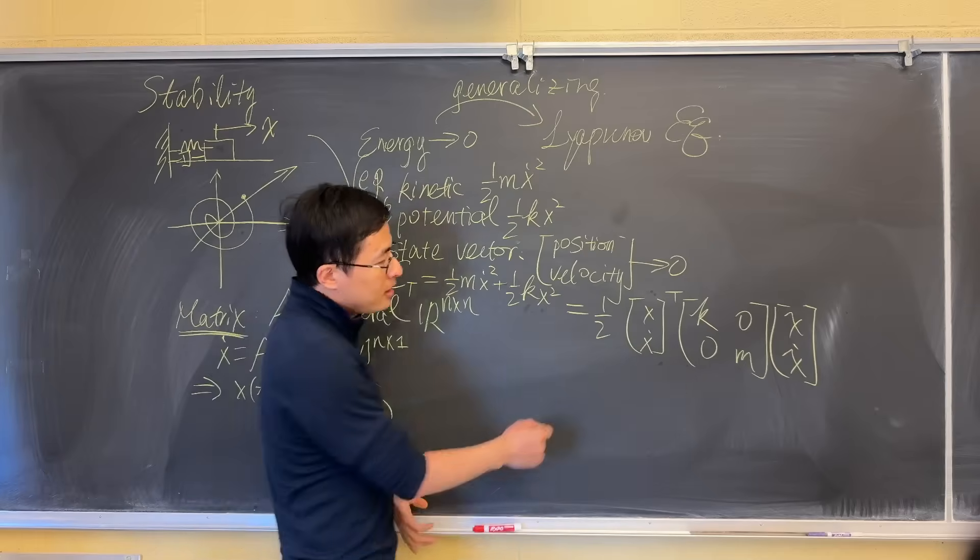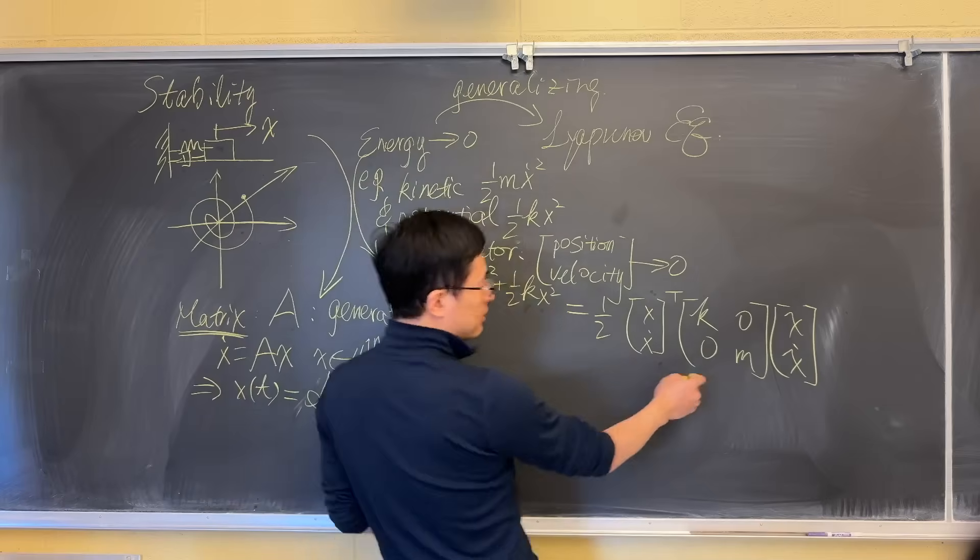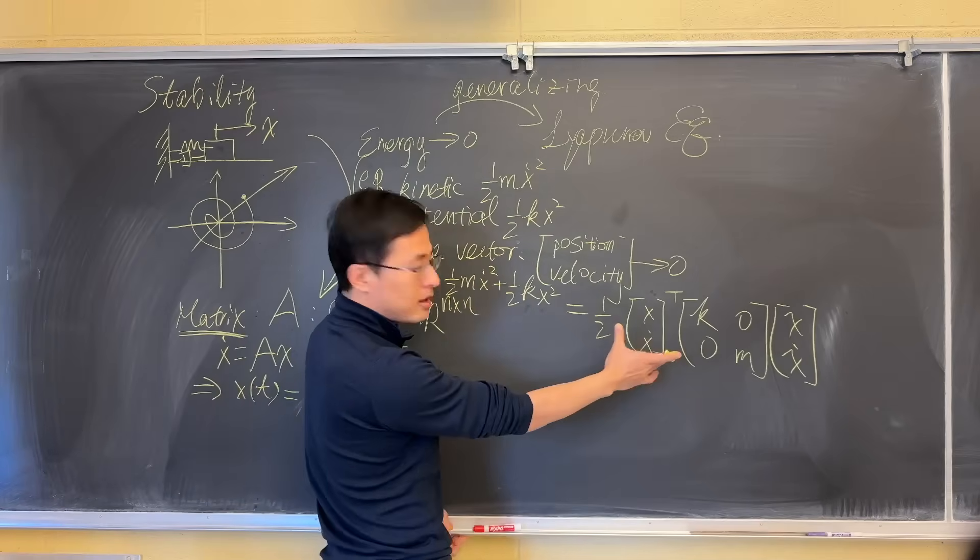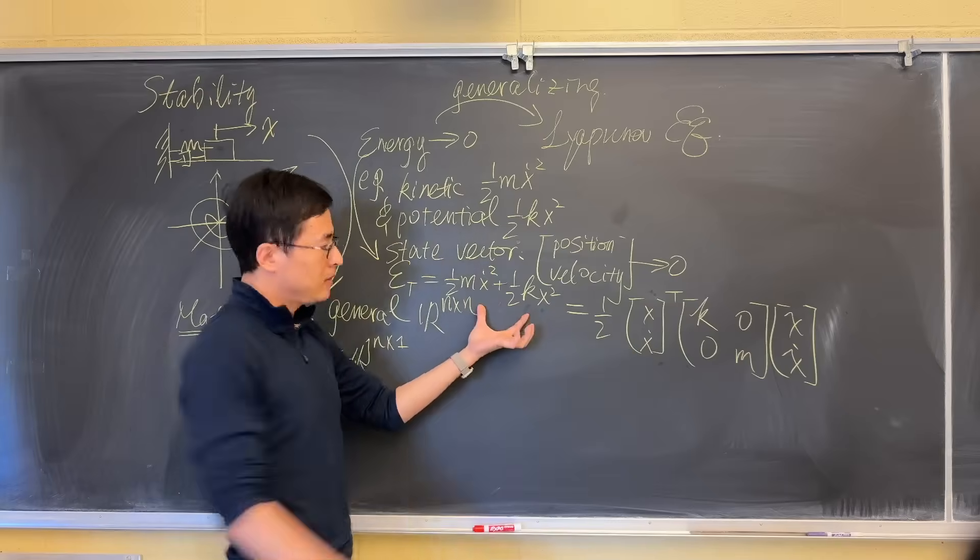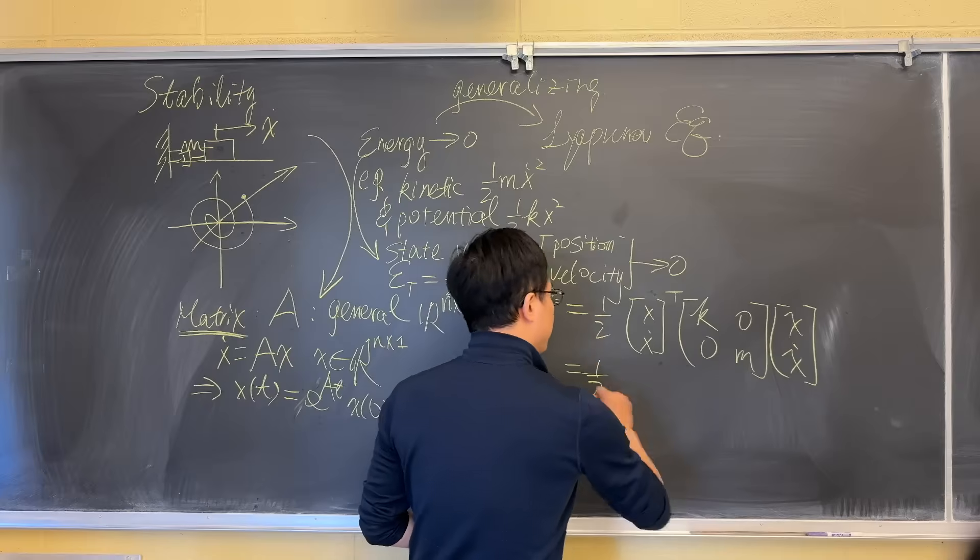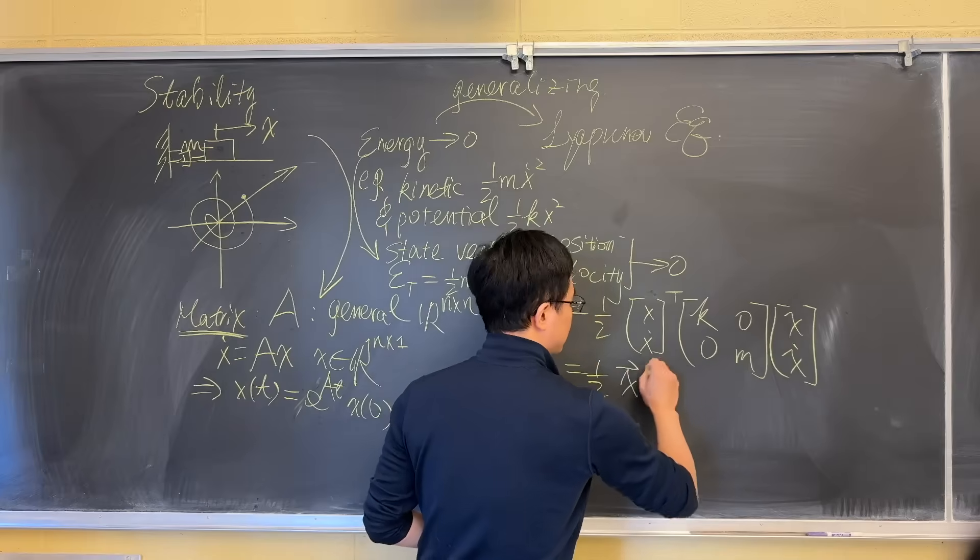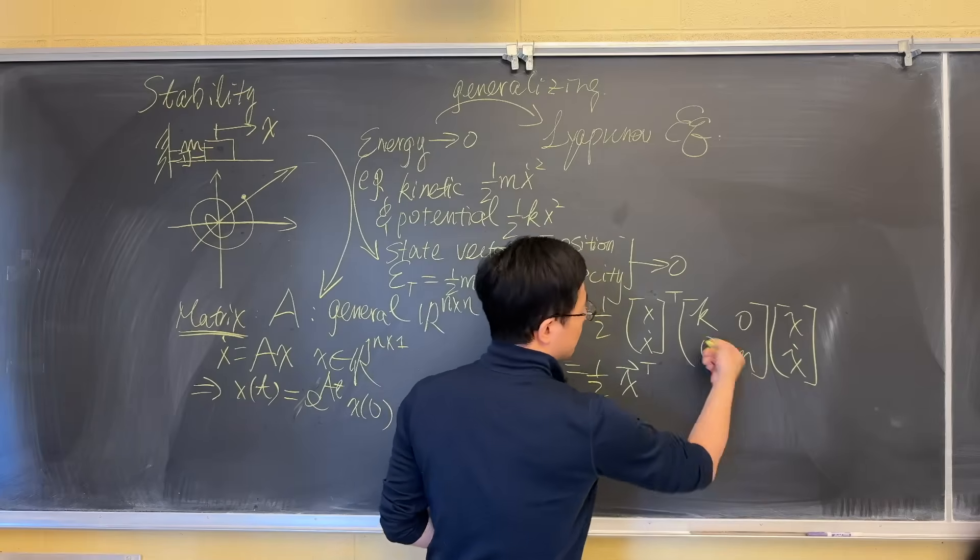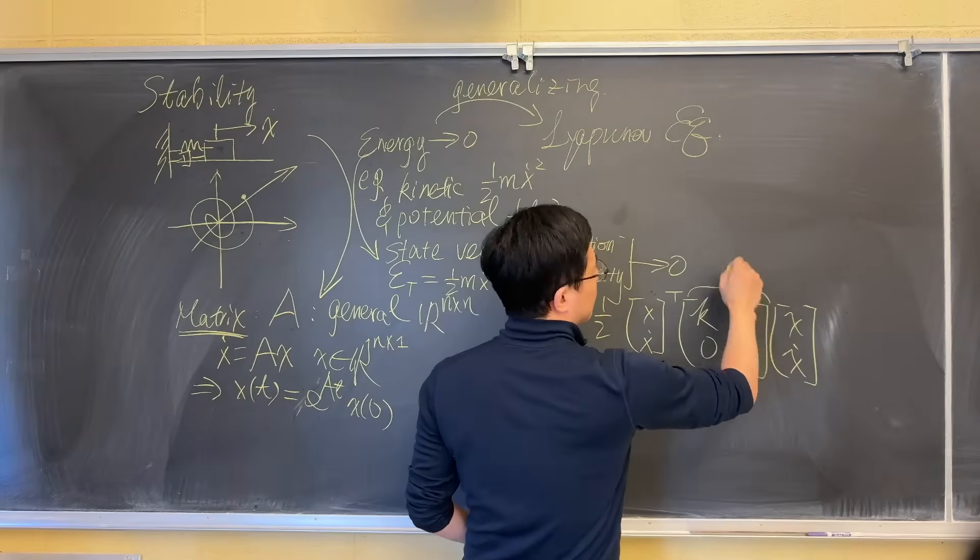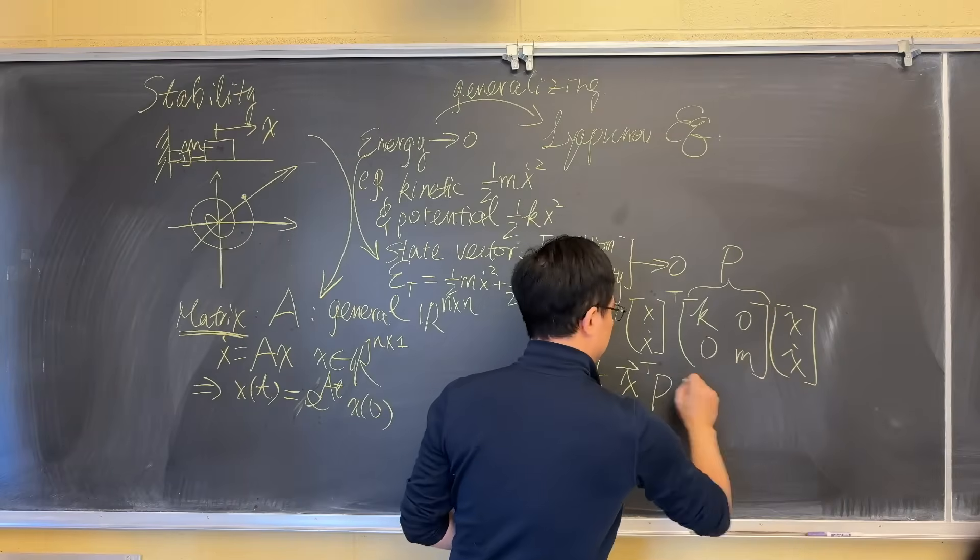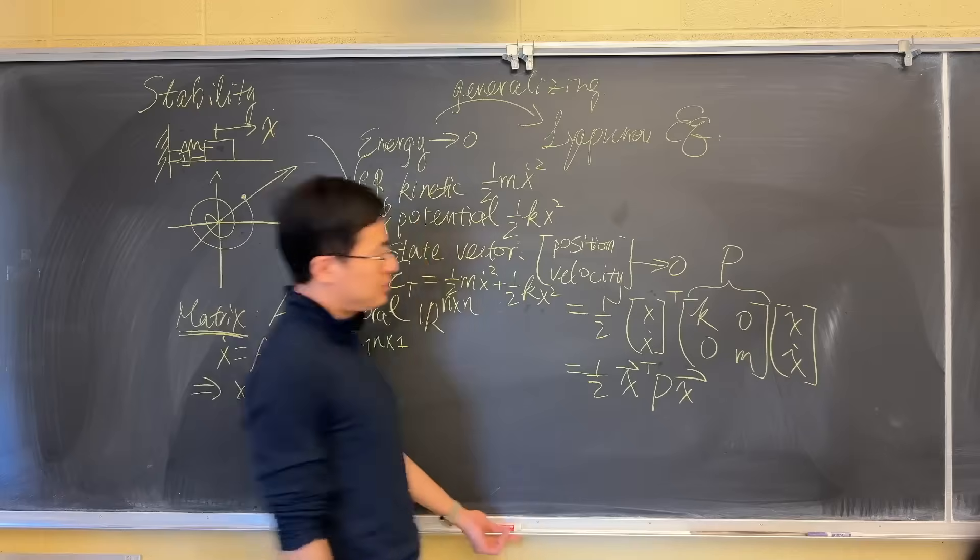If you write it this way, then symbolically you just have one term instead of two terms. You can write it as half of, let's call this x vector transpose, and then this matrix I can write it as P, and then x vector.